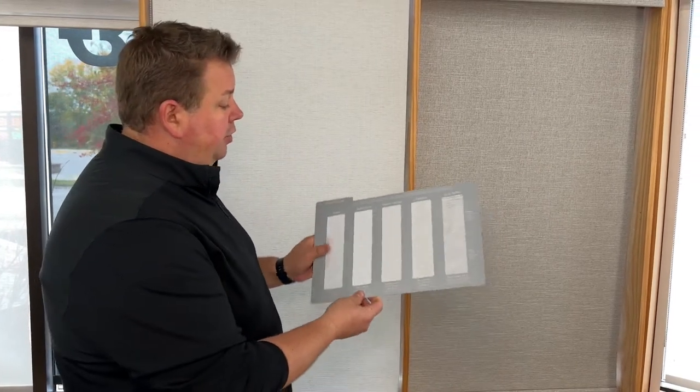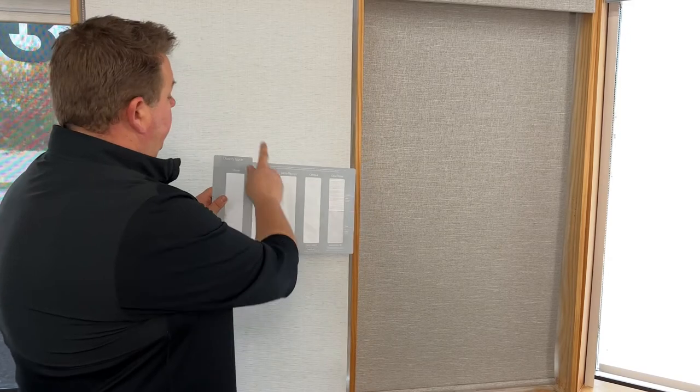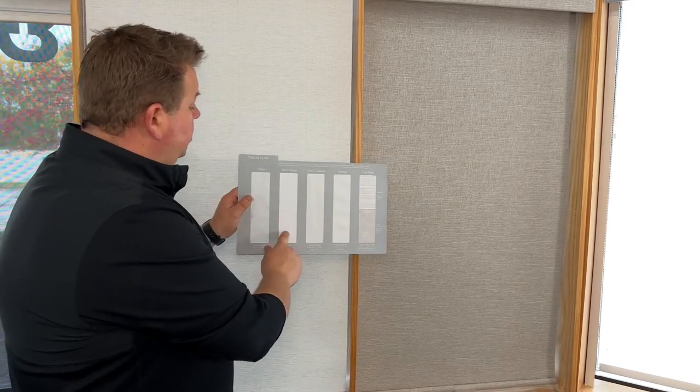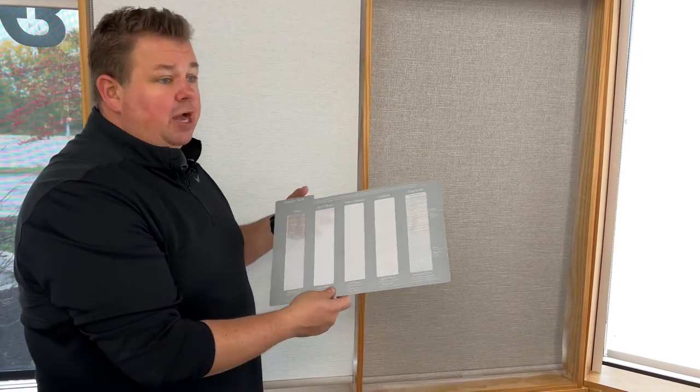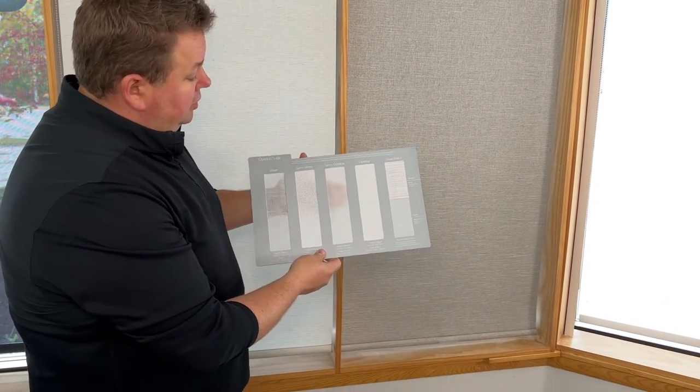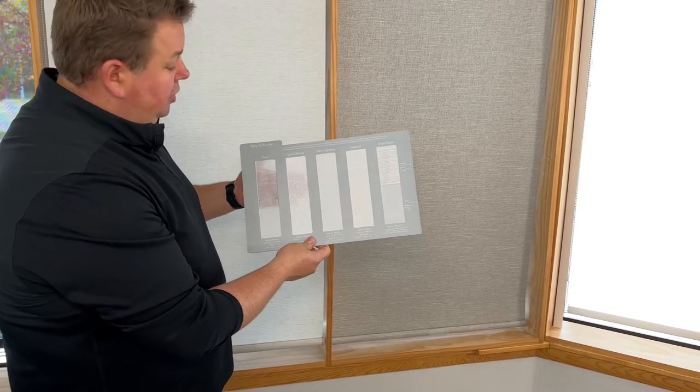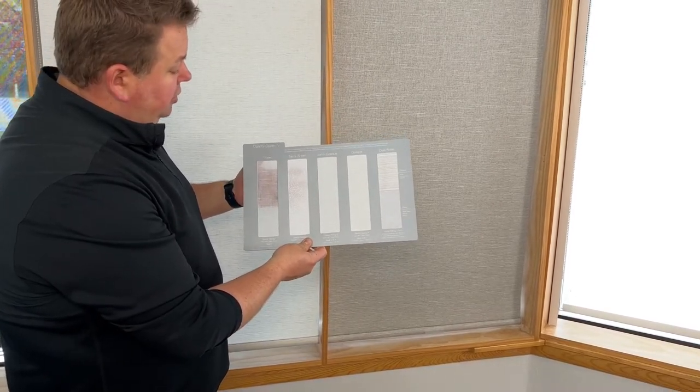We have our opaque which is this shade here, our semi-opaque this shade here, and we have a semi-sheer shade which will give you some privacy. But as you can see with my hand here, you can't see my hand by the opaque, with the semi-opaque you can kind of see it but it'll give you privacy. With the semi-sheer, you're able to see through it better.